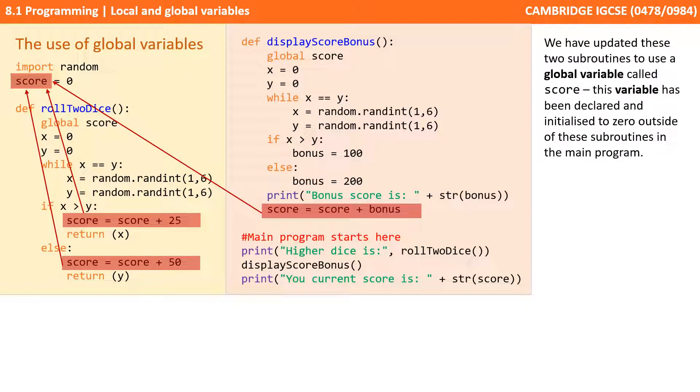So, we've updated our two subroutines to make use of a global variable, this time called score. This variable has been declared and initialized to zero outside of these subroutines in the main body of the program.